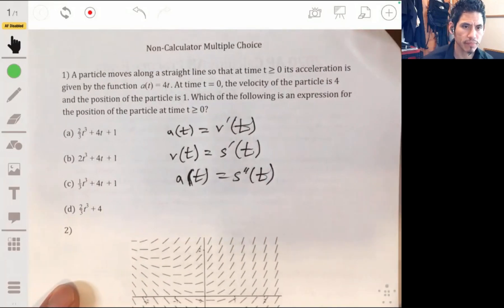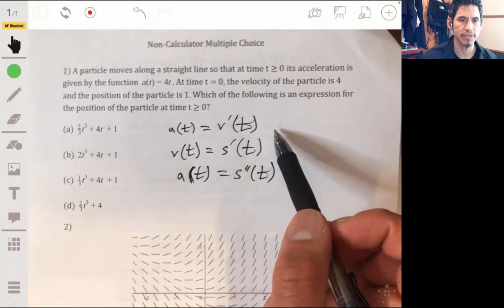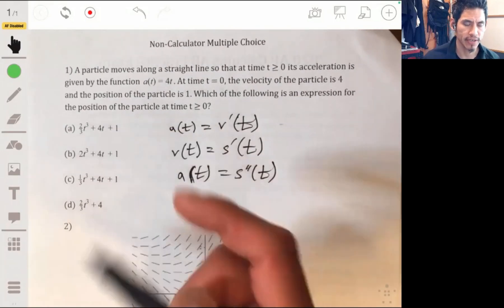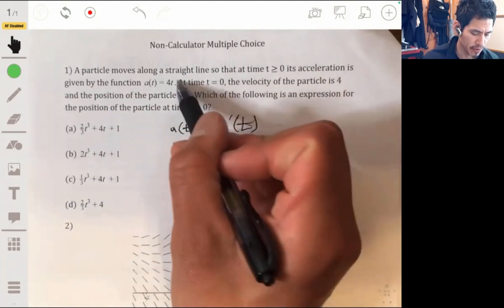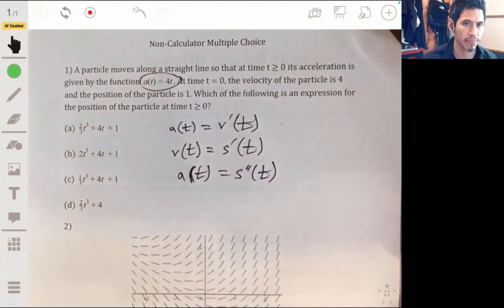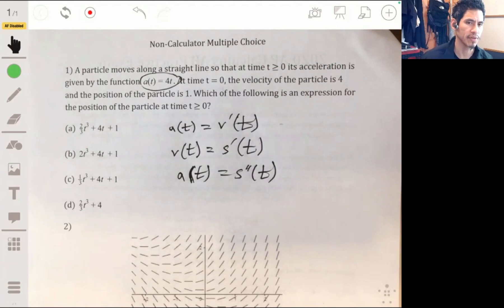Sorry for the messy writing. So one way to go about this is just find the second derivative of these functions and see which of those would give you 4t. That would probably be the fastest way.